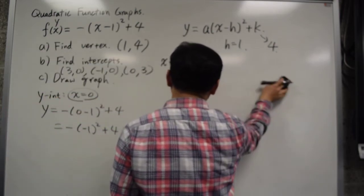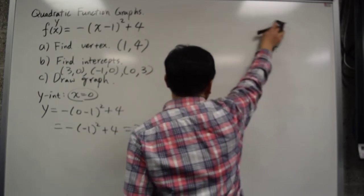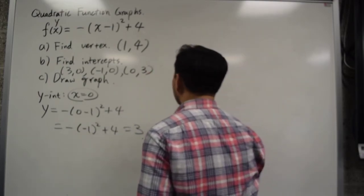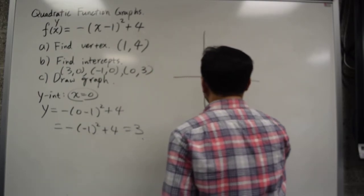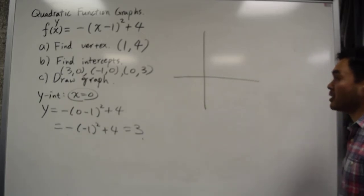Once you know the intercepts and the vertex, then it's really easy to draw the graph. You just have to put them on the graph and then just connect them.